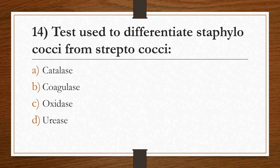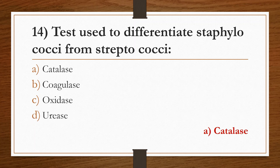Which of the following test is used to differentiate Staphylococcus from Streptococcus? Option A: Catalase test. Option B: Coagulase test. Option C: Oxidase test. Option D: Urease test. Answer is Option A, Catalase test. Coagulase test is used to differentiate Staphylococcus aureus from other Staphylococcus species, i.e., coagulase-negative Staphylococcus.